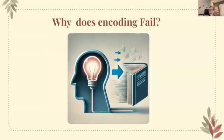Why does encoding fail? We talked in other videos about encoding, recall, and retrieval, but why does encoding fail? Not all information we encounter is stored in memory because the brain is quite selective about the encoding process. The brain often overlooks trivial details and focuses on encoding information it deems more relevant or necessary. This selective process can lead to gaps in memory where less important details are simply not retained, affecting our ability to recall these minor aspects later.